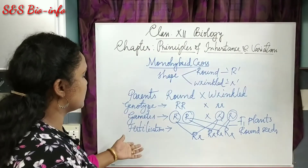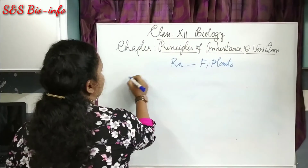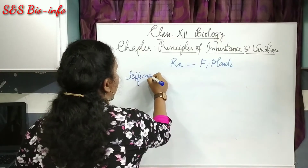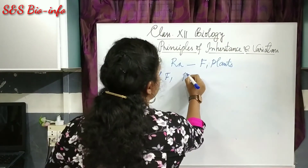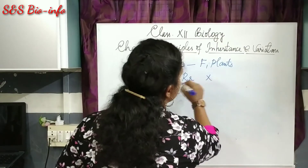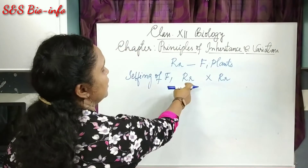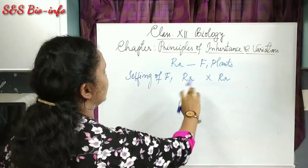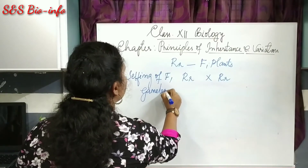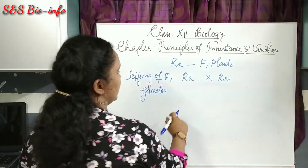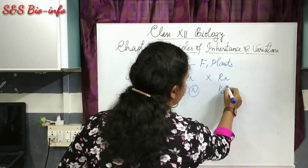The next step is the self-pollination of the F1 plants. In the selfing of F1, both parents have the same genotype — heterozygous dominant, capital R with small r. Two types of gametes are formed here.